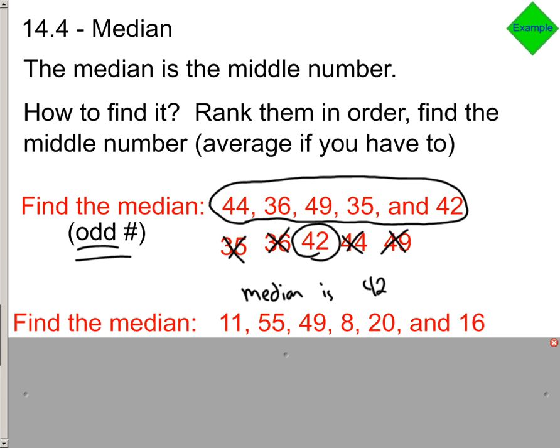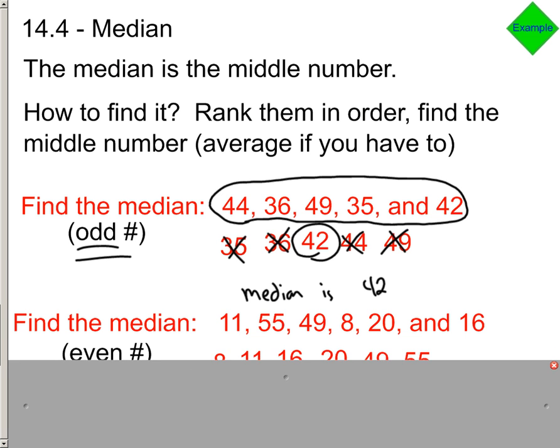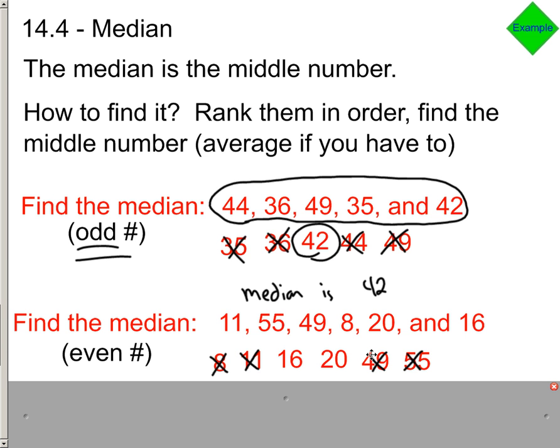Now when we look at an even set of numbers—one, two, three, four, five, six numbers, that's an even set—you still need to rank them from least to greatest and find the middle number. We're going to use the same strategy again, but if you notice, you could actually run out of numbers. If you can't find just one number in the middle...